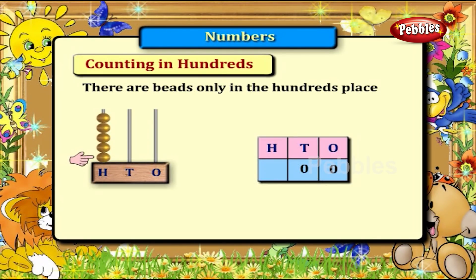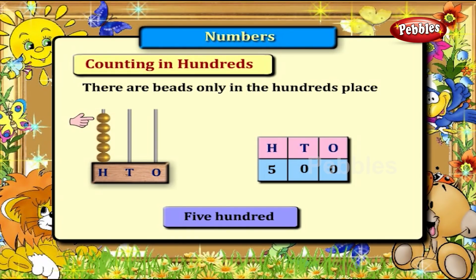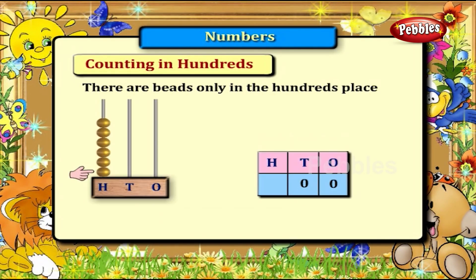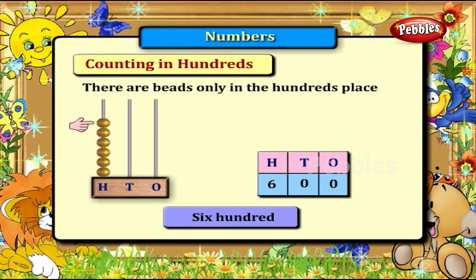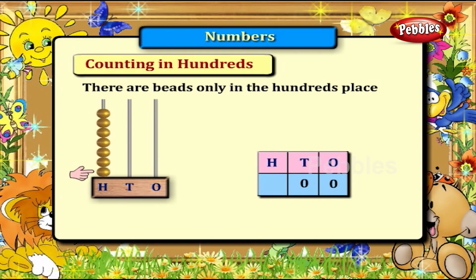For 500: 1, 2, 3, 4, 5 — five beads for 500. For 600: 1, 2, 3, 4, 5, 6 — six beads for 600.